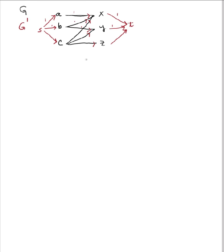Let's proceed to do the Ford-Fulkerson algorithm on this. Our first step in Ford-Fulkerson is to draw the residual graph. My residual graph is exactly the same as this graph right here, because the only thing I can do is push things forward. So let me label the capacities on everything. From this residual graph, which is exactly the same as our original graph, I need to find a path from S to T that follows along my direction.